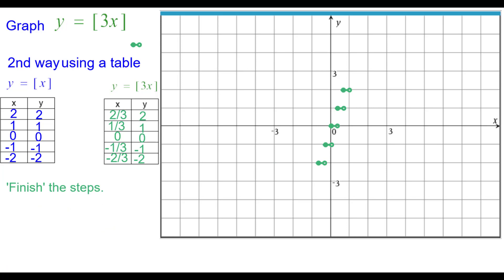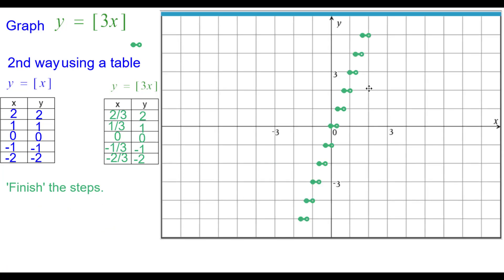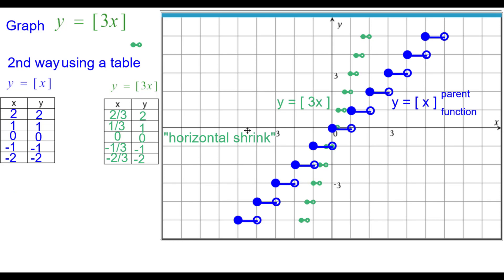We can go ahead and finish the steps, add in a few more, get enough to see the pattern there. It does go on infinitely in both directions. And then we can compare it to the parent function and see that it is a horizontal shrink.